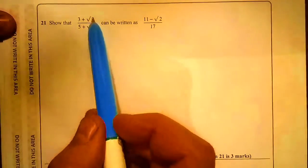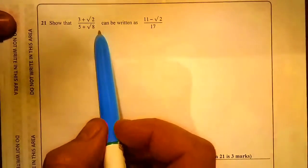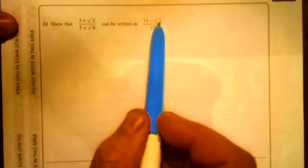Show that (3 + √2)/(5 + √8) can be written as (11 - √2)/17.